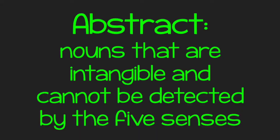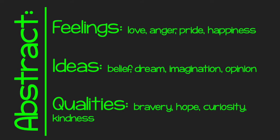The other type of noun we're talking about is abstract nouns. An abstract noun is an intangible thing like feelings, ideas, and qualities that you cannot experience with your five senses. You can't see them, touch them, taste them, hear them, or smell them. Some feelings that are examples of abstract nouns are love, anger, pride, amazement, happiness. Some ideas would be belief, dream, imagination, an opinion, a memory. And qualities would be bravery, courage, hope, and curiosity.